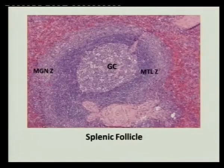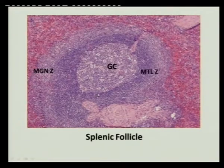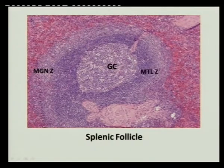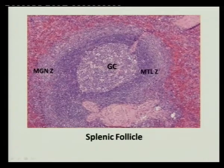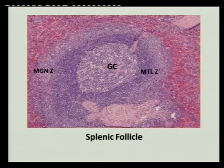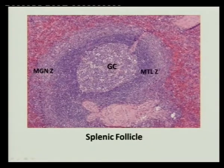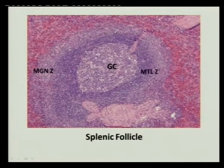Moving to splenic follicle anatomy: to recapitulate, there is the germinal center, surrounded by the mantle zone (the darker layer), and beyond that the marginal zone. The marginal zone is nicely delineated in the spleen — in fact it's the biggest zone there — though it's not easy to identify in lymph nodes. The periarteriolar lymphoid sheath (PALS) is where T cells reside, cuffing around the artery; the rest is B cells. This understanding is key when studying diseases arising from the spleen, particularly splenic marginal zone lymphoma.